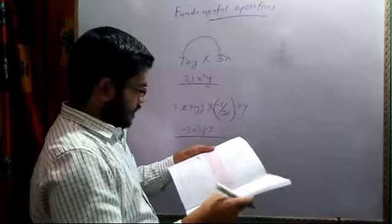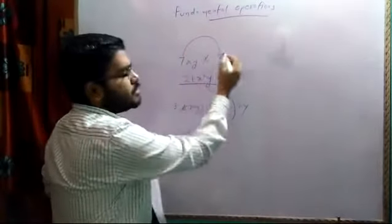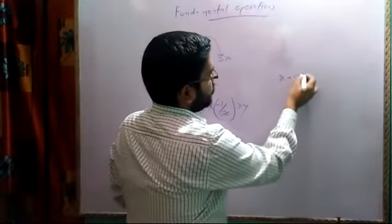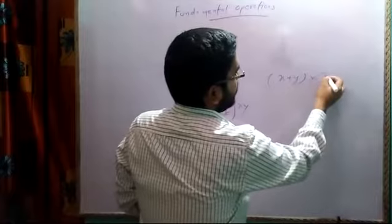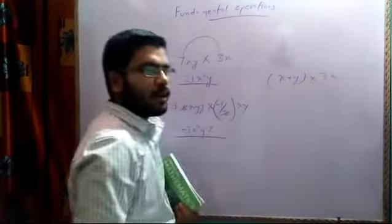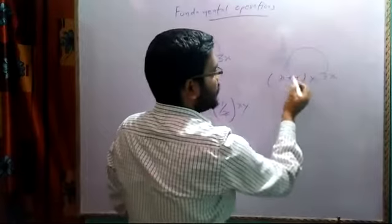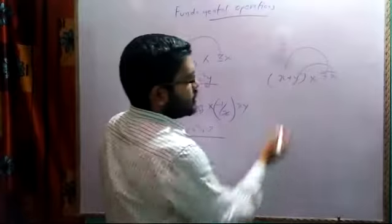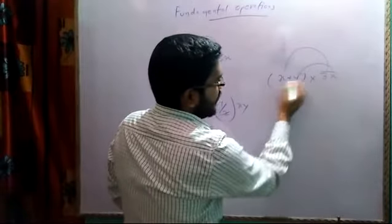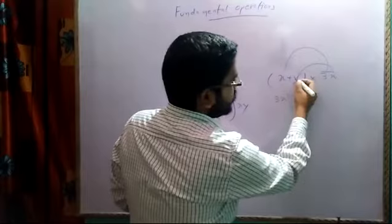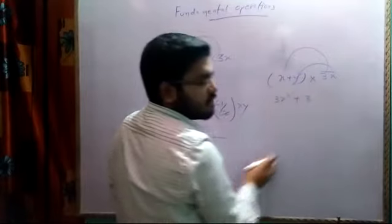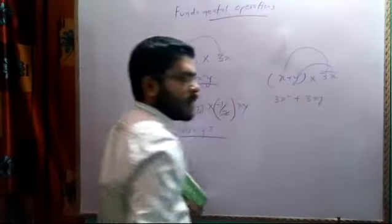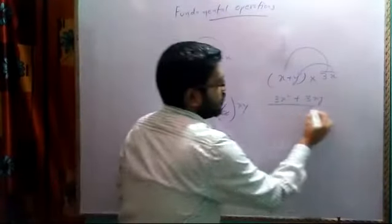This was the case where one term is multiplied with one term. When we have two terms like x plus y multiplied with 3x, we have to multiply each term: 3 into x into x will become x square, and then 3 into y gives no constant, so y will be multiplied with x to become xy. So the result is 3x² plus 3xy.